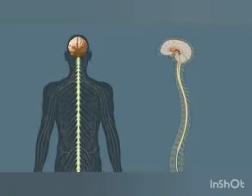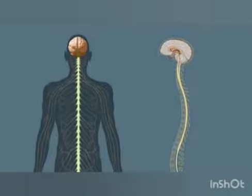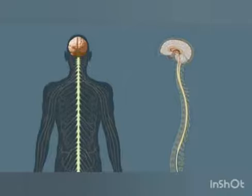Actions that do not involve the brain are called reflex actions. Any action like picking a fruit requires information to be sent to the brain first, then our body performs that action. But some actions do not need messages from the brain — the spinal cord is directly involved in those, and those are called reflex actions, which we will discuss in more detail later.